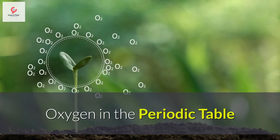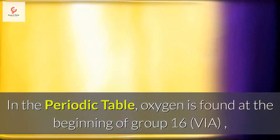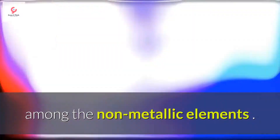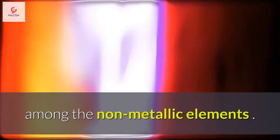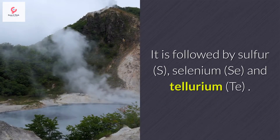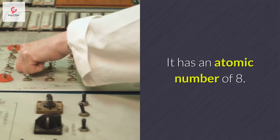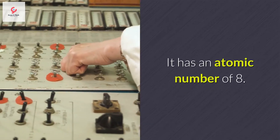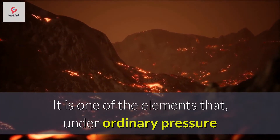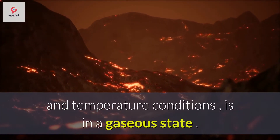Oxygen in the periodic table. In the periodic table, oxygen is found at the beginning of group 16, among the non-metallic elements. It is followed by sulfur S, selenium Se, and tellurium Te. It has an atomic number of 8. It is one of the elements that, under ordinary pressure and temperature conditions, is in a gaseous state.